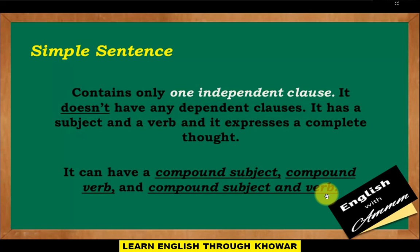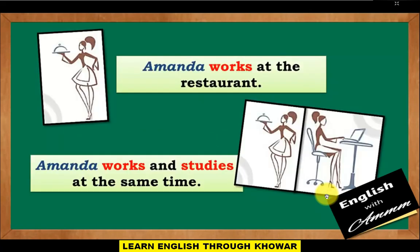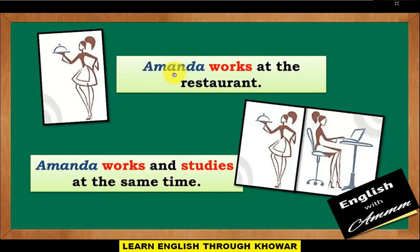First example: 'Amanda works at the restaurant.' This is a simple sentence because it contains only one independent clause and no dependent clauses. 'Amanda' is the subject and 'works' is the verb.